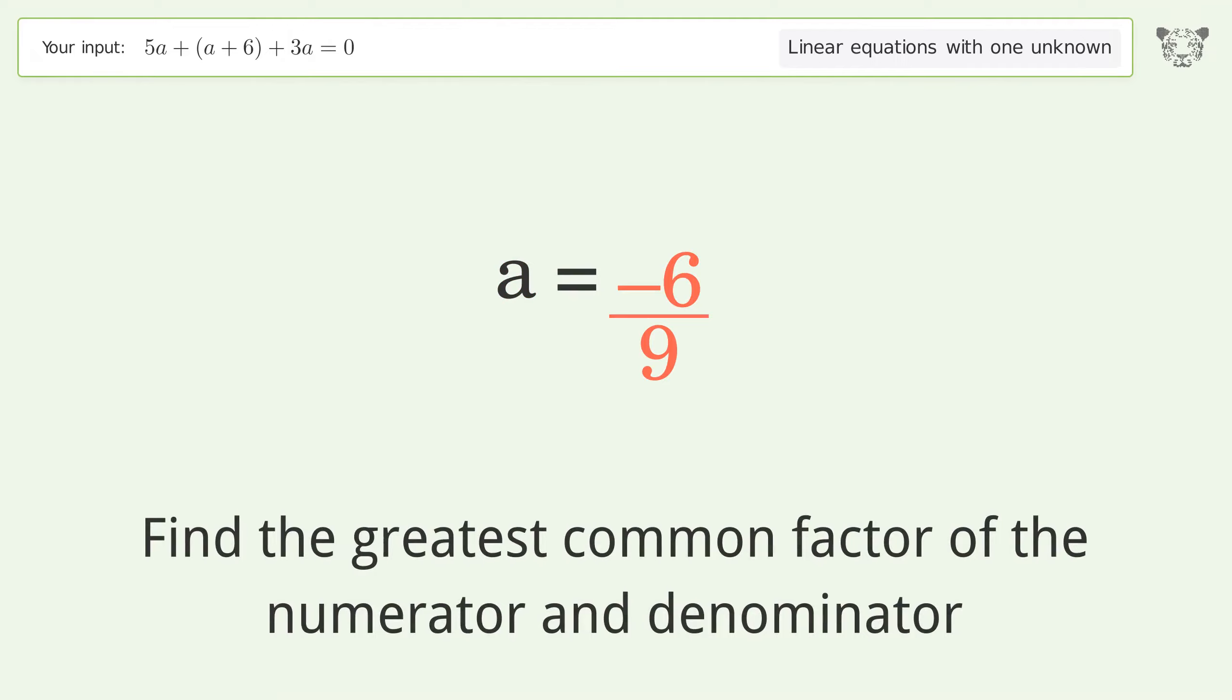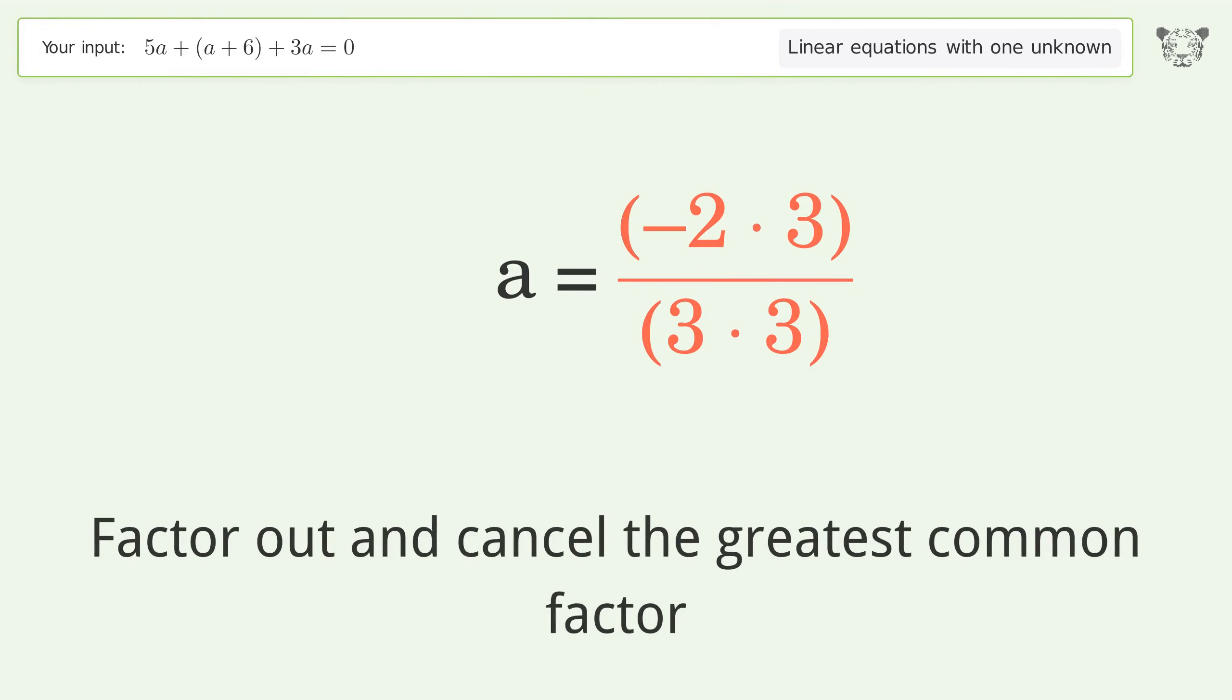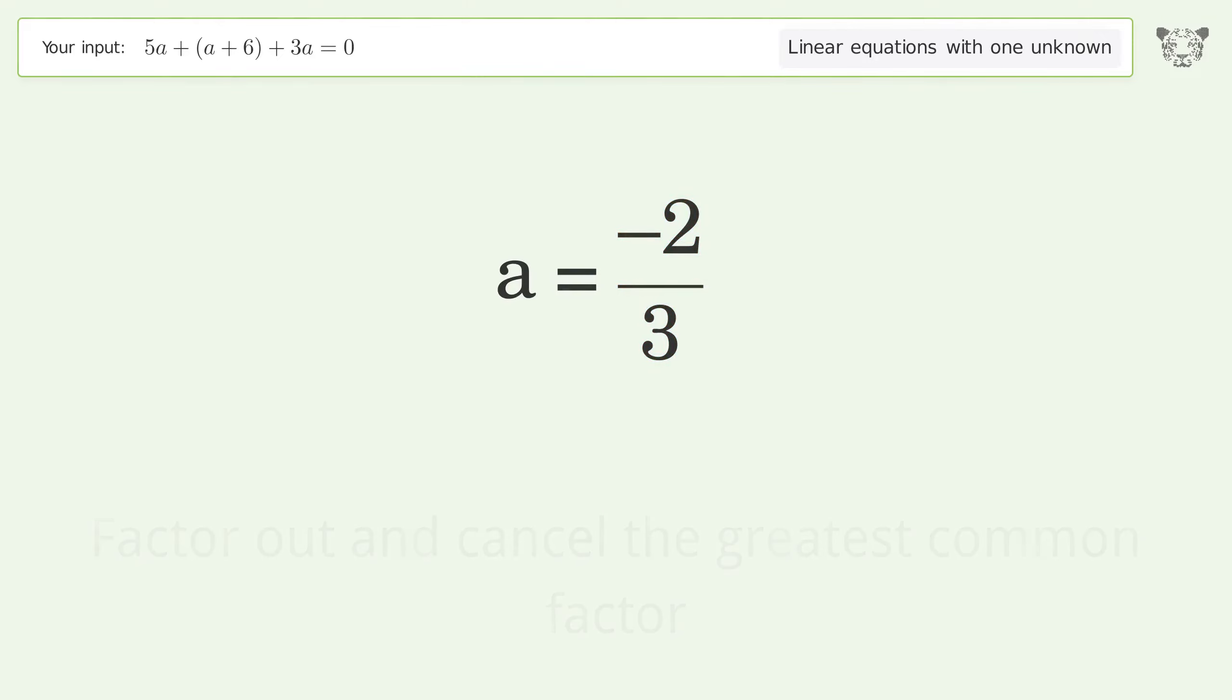Find the greatest common factor of the numerator and denominator. Factor out and cancel the greatest common factor. The final result is a equals negative 2 over 3.